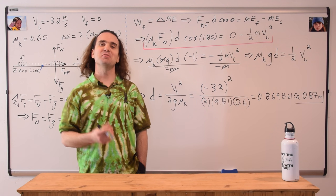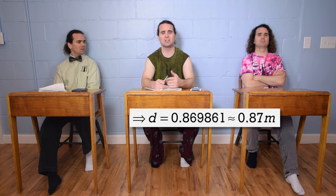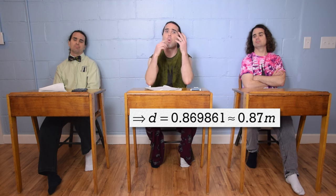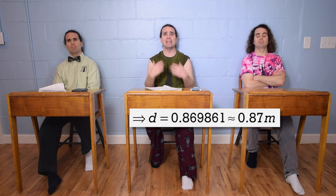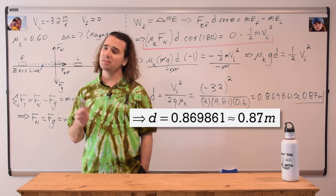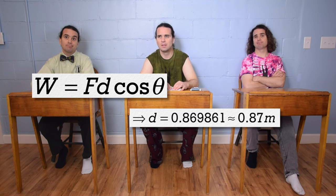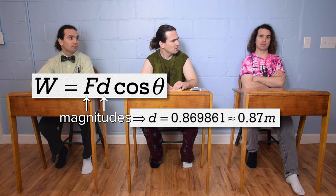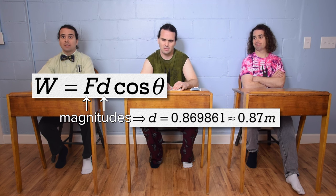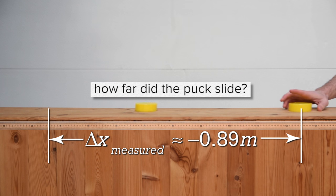Wait a second — the puck moves to the left, so the displacement should be negative. Our answer should be negative! Bobby, chill out — we got the right answer. Please explain. When using the work equation, you only use magnitudes of the force and the displacement. So if you solve for the displacement in the work equation, you will only get the magnitude of that variable. So our answer is the magnitude of the displacement of the puck, which is the answer to how far the puck slid. Our answer is correct.